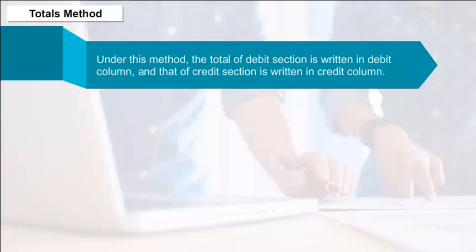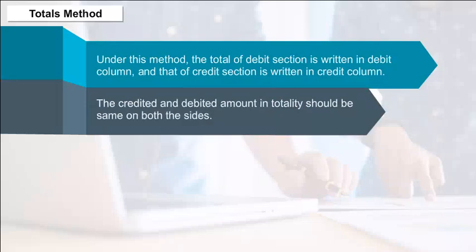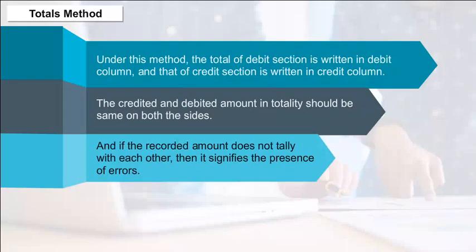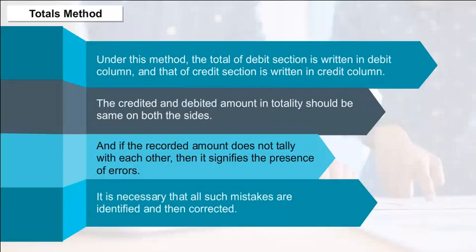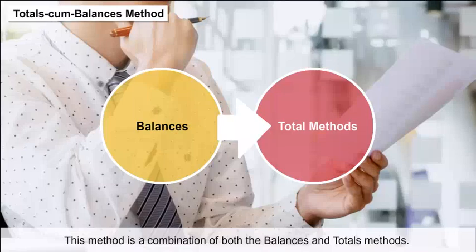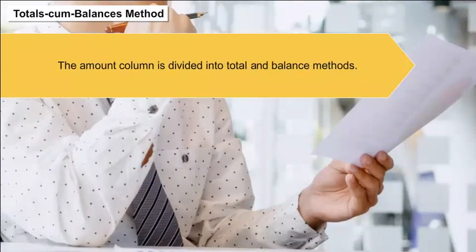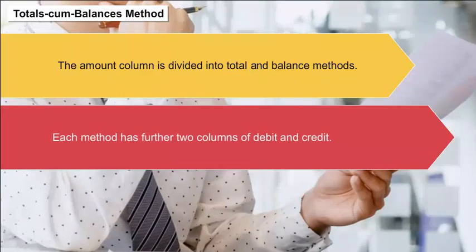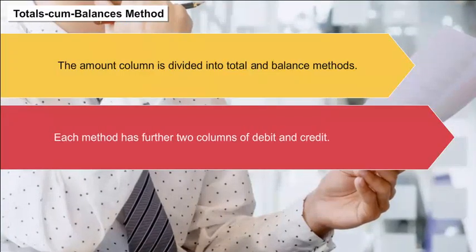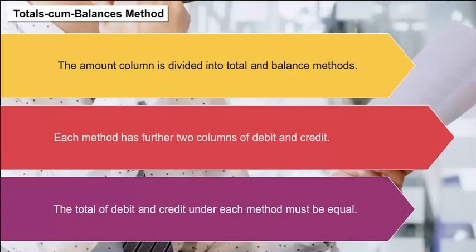Under the totals method, the total of the debit section is written in the debit column and that of the credit section in the credit column. The credited and debited amounts in totality should be the same on both sides; if they do not tally, it signifies the presence of errors. The totals-cum-balances method is a combination of both the balances and totals methods, with the amount column divided into total and balances sub-columns, each having debit and credit columns.